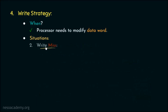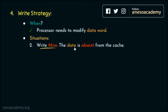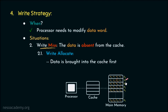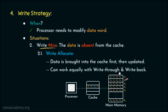Now for a write miss — the data the processor needs to modify is absent from the cache — there are also two strategies. The first is write allocate: since the data is absent, the main memory block is first brought into the cache, then the update is made. Write allocate can work with write through or write back, but since write through suffers from delayed writes, write allocate is mostly used with write back.